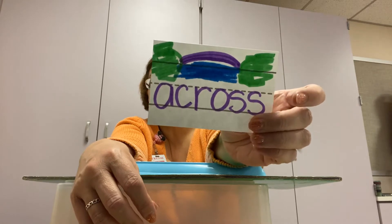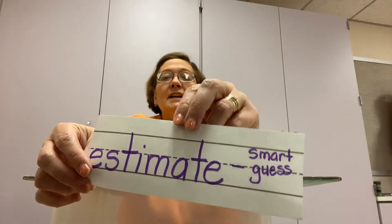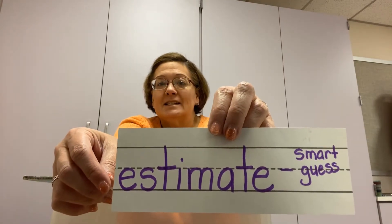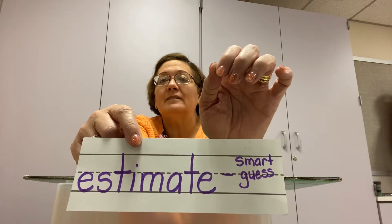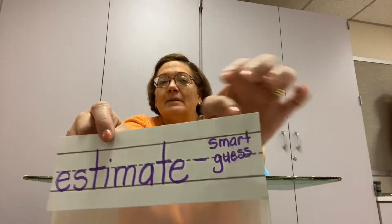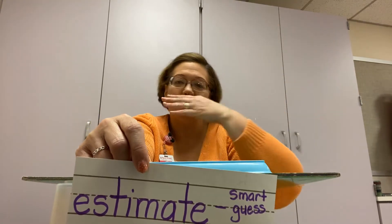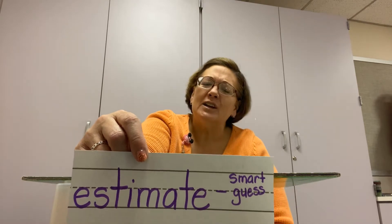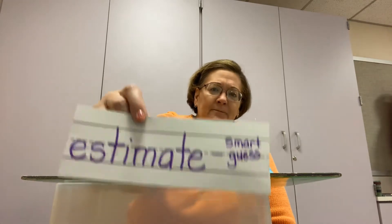Across — can you say that? Across. And there's a C right there. The next one is 'estimate' — it's a really cool word. Can you say it? Estimate. There's an A right there. To estimate means you make a smart guess. You're guessing, you're not really sure, but you're going to use the information you already know to make a smart guess.